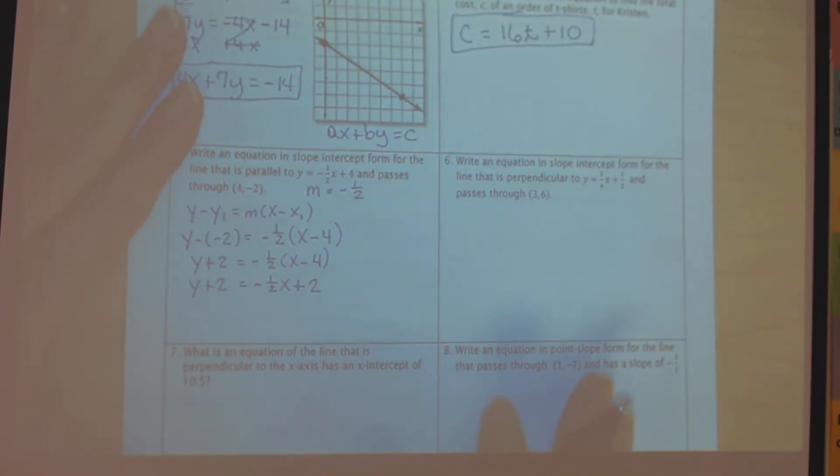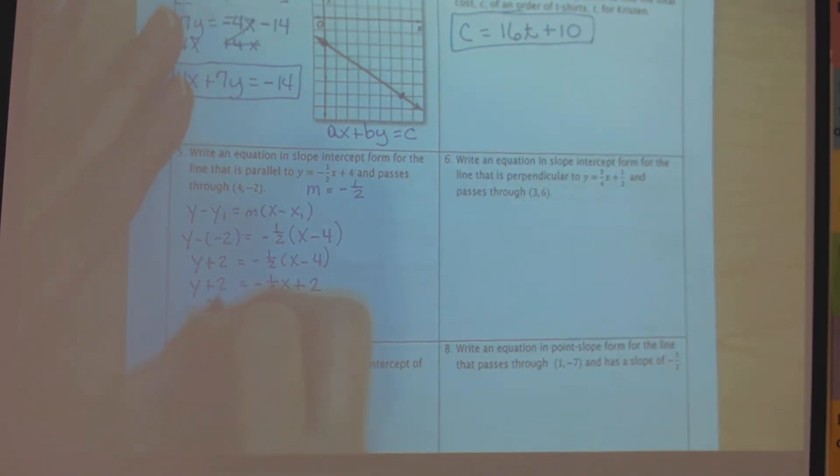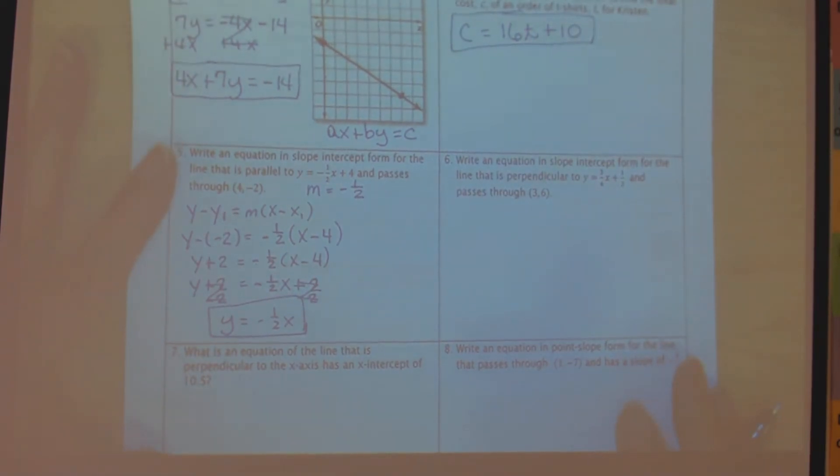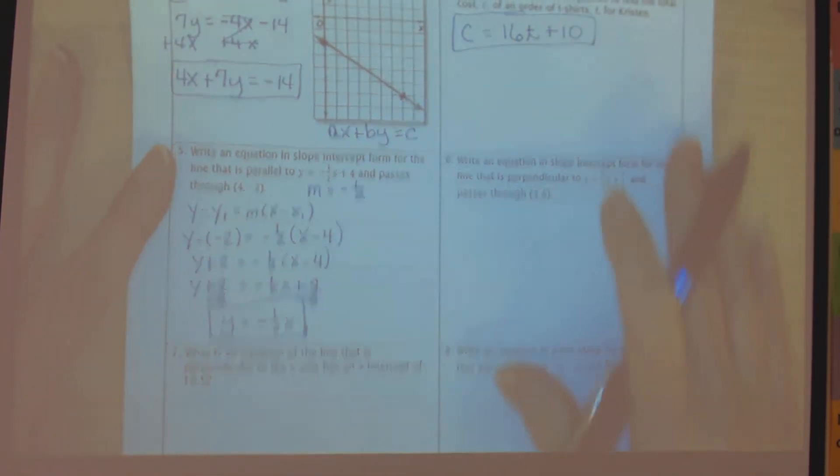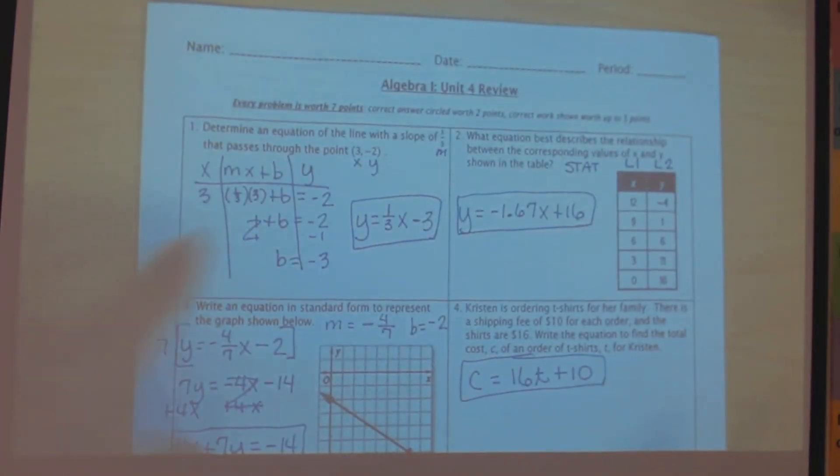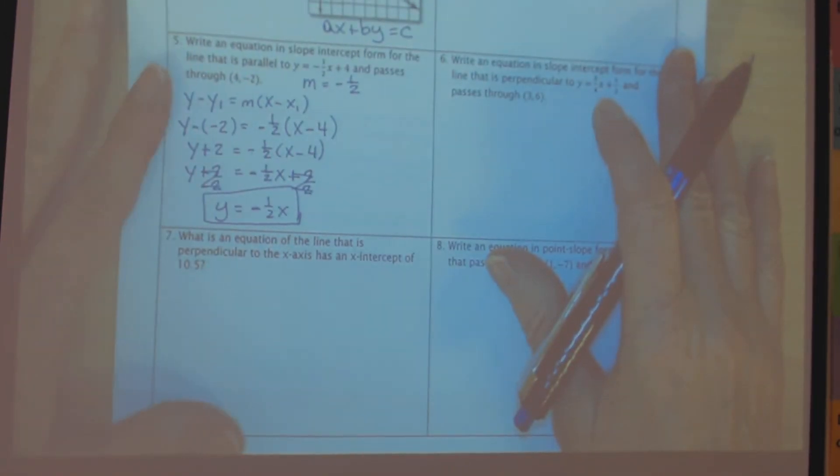So at this point, I'm ready to go ahead and get rid of this 2 so that I can have the y by itself. So I'm going to subtract 2 from both sides. This zeroes out, leaving y equals negative 1 half x, and this also zeroes out, so I don't have anything being added or subtracted. I just get y equals negative 1 half x. So that means that if you had used this process, when you solved for b, this would have been a zero here, because we have a y-intercept of zero. We just don't write plus zero.